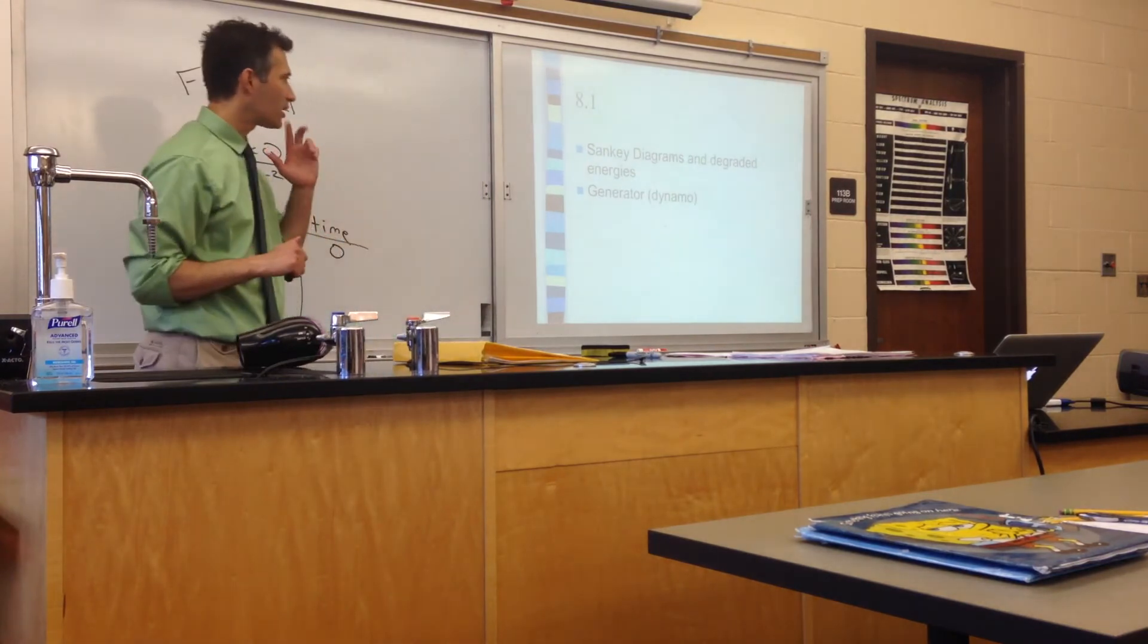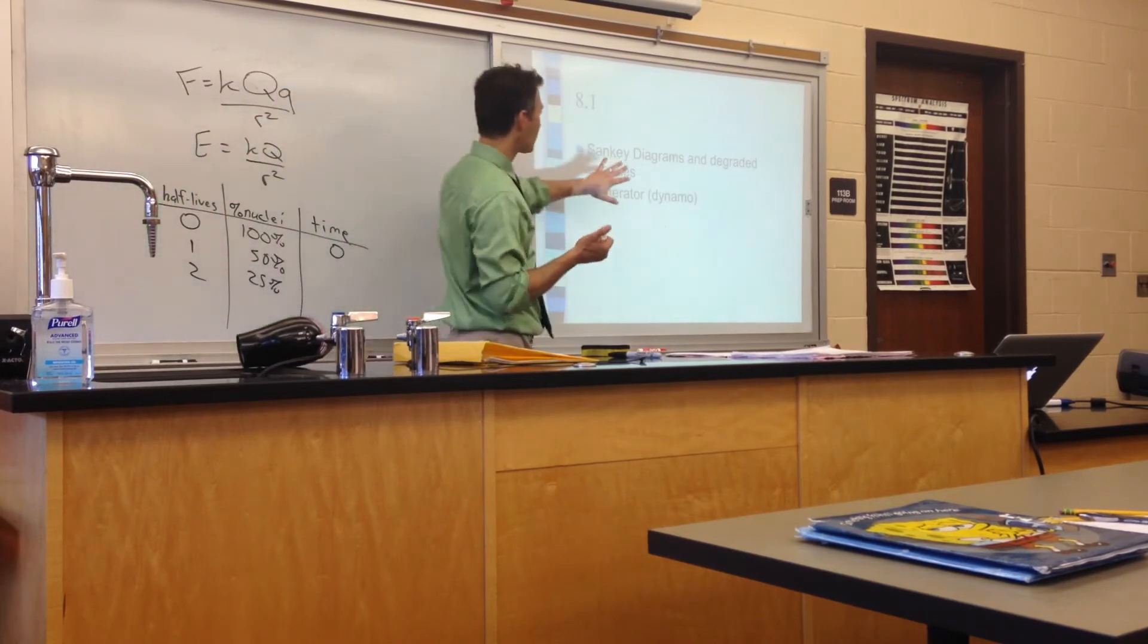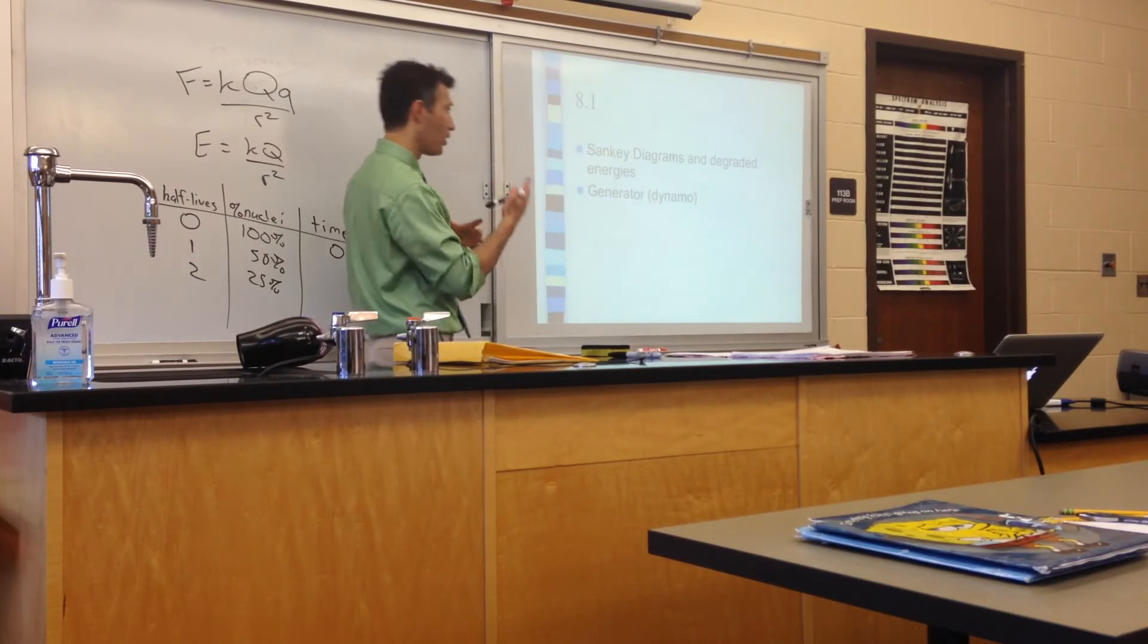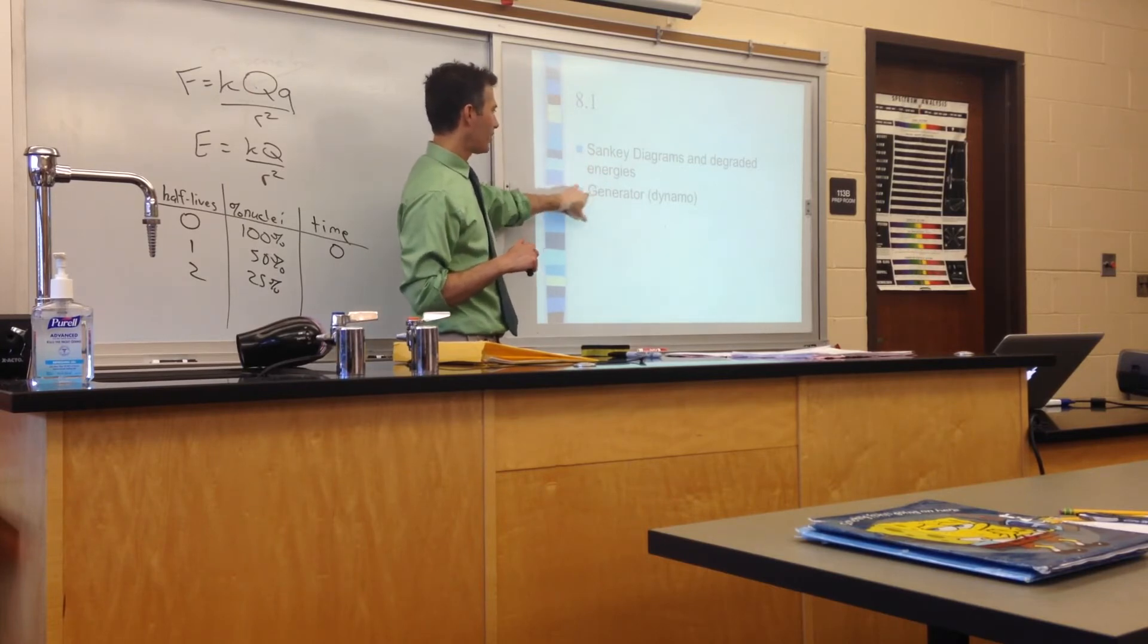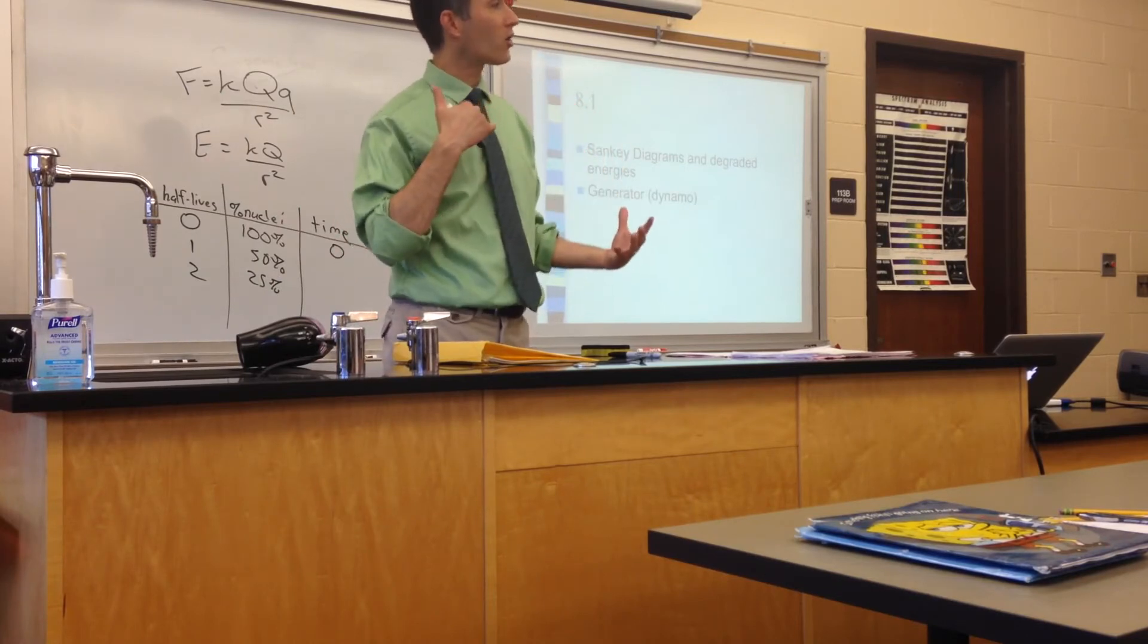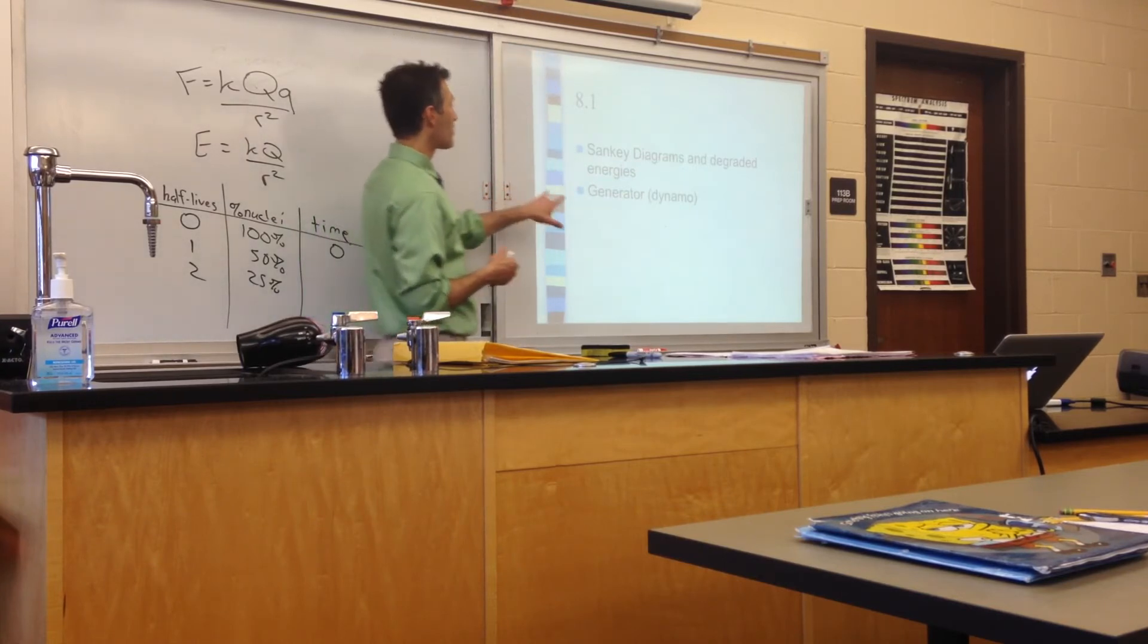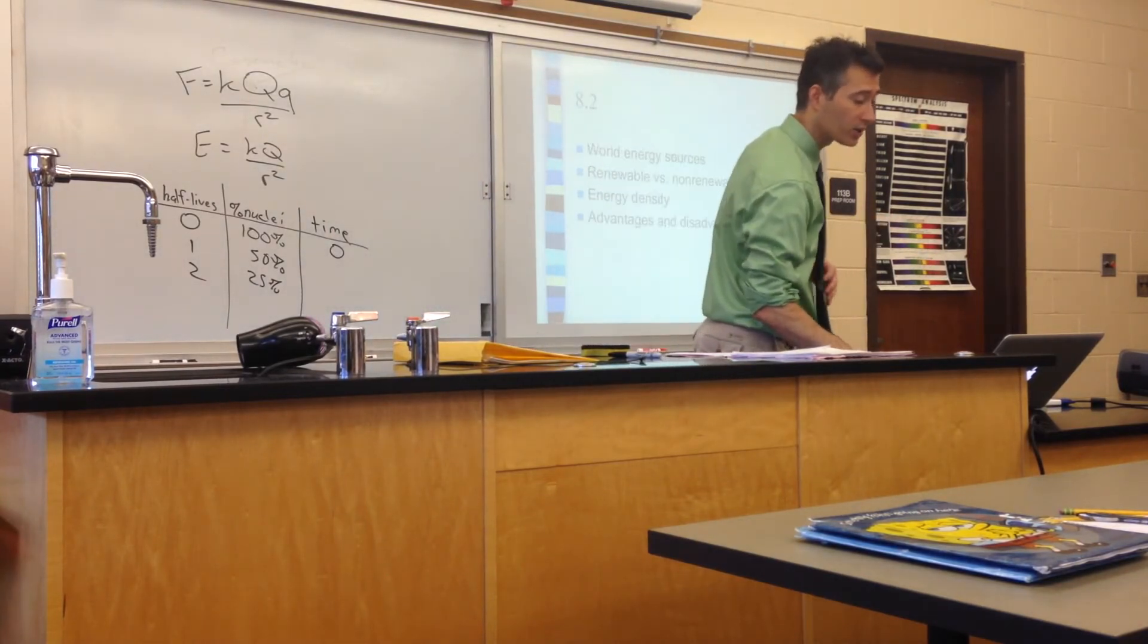We actually had a bunch of different subtopics, six of them. So first we had energy degradation and power generation. One of our first topics involved degraded energies, which just mean energy that's in a less usable form. And we kept track of that by doing those Sankey diagrams, where the width of the arrow was proportional to the amount of energy. We also encountered our generator, which IB sometimes calls a dynamo for the first time. And our generator is just something that moves a magnetic field in the presence of wires, or moves wires in the presence of a magnetic field, and induces a current in those wires.